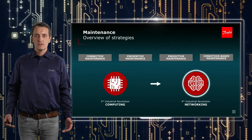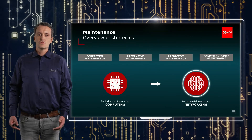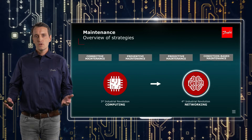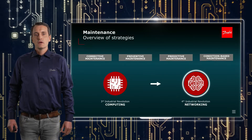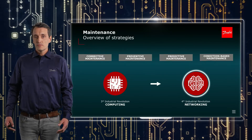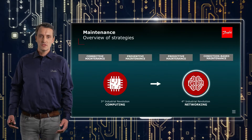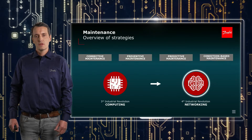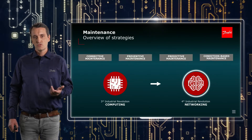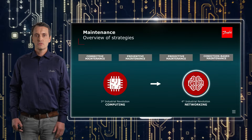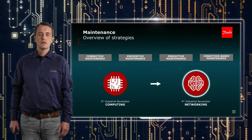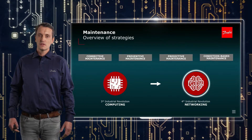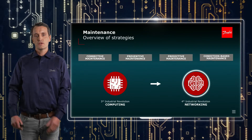So if we talk about maintenance, you will see that people use different strategies, and one of them is corrective maintenance. The idea is simple: you just let the machine run until failure and if there's a failure, you go and fix it. That works fine if you have the right people with the right tools and spare parts around to fix the issue quickly, but you need to accept a certain amount of downtime.